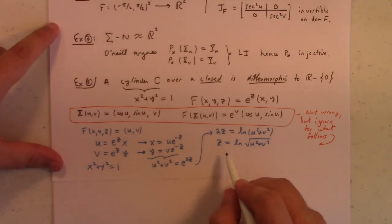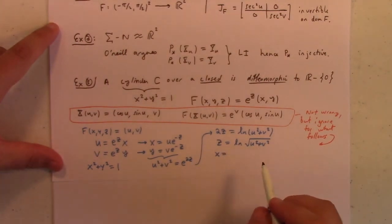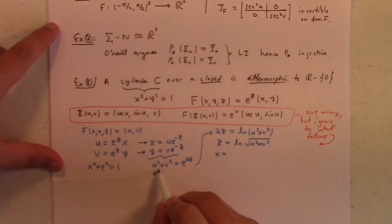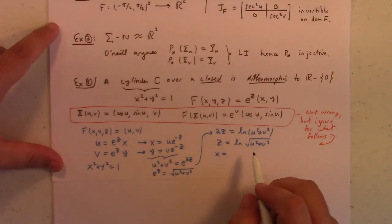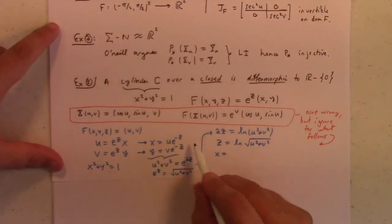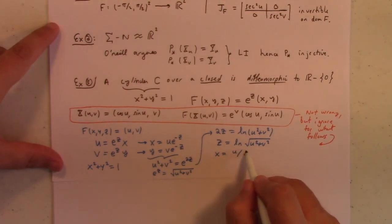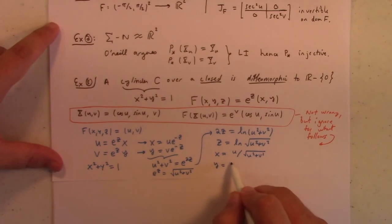And likewise, x is equal to, let's see here. Oh, so by the way, this is also giving me e to the z is the square root of u squared plus v squared. And so, x is equal to u over the square root of u squared plus v squared. And y is equal to v over the square root of u squared plus v squared.